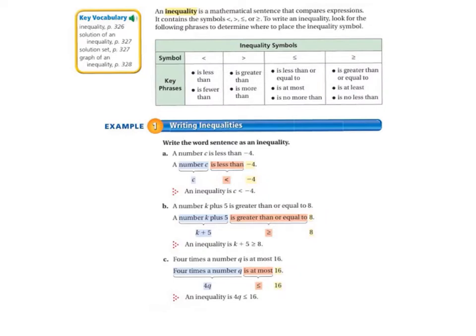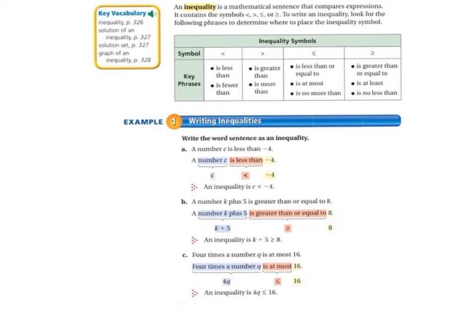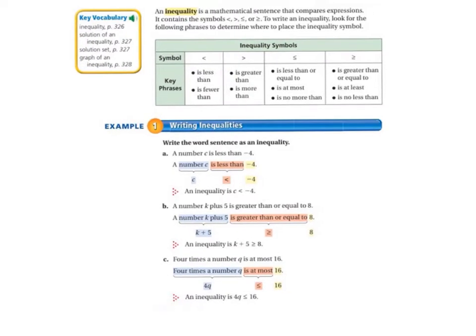Today we'll be starting on page 326 in your math textbook. An inequality is a mathematical sentence that compares expressions. It contains the symbols less than, greater than, less than or equal to, or greater than or equal to. To write an inequality, look for the following phrases to determine where to place the inequality symbol. We had you write these in your math notebook yesterday, so you should be all set. This is just a reminder for you.